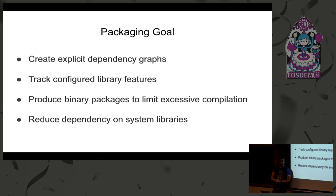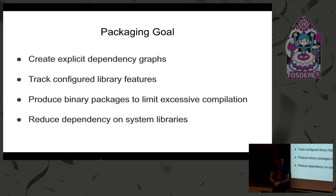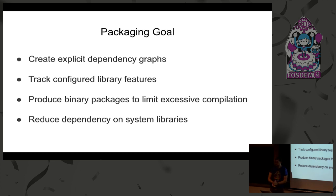When it comes to packaging, we want to create explicit dependency graphs — not run CMake, have it tell us what we don't have, try again, have it still tell us what we don't have. We also want to track configured features: these libraries are very large and we don't always want to configure every single feature inside of GNU Radio just to do one simple FM signal stream. And we don't want to rebuild all our dependencies every time we change one line of code or upgrade something like OpenCV. Having been part of GNU Radio, there's always the question: does it build on Mac, Windows, Linux?